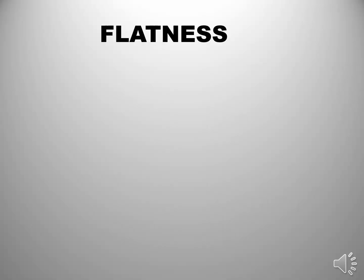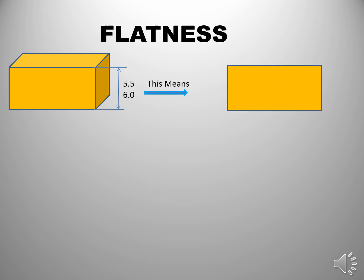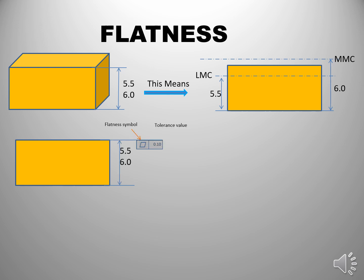This means that the minimum thickness of the rectangular box is 5.5 and maximum is 6. Here we can consider a flatness. Here you can see flatness symbol and the tolerance is 0.1. This means that the flatness of the rectangular box should be within this tolerant zone.